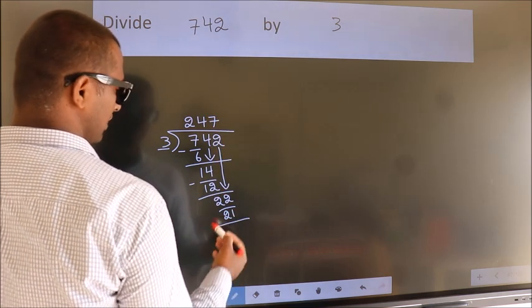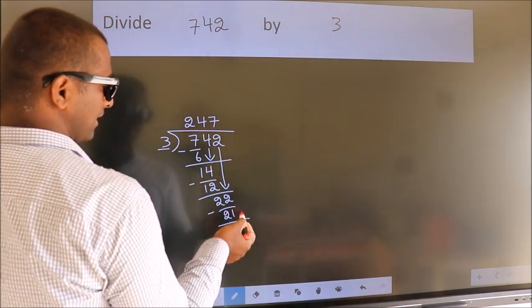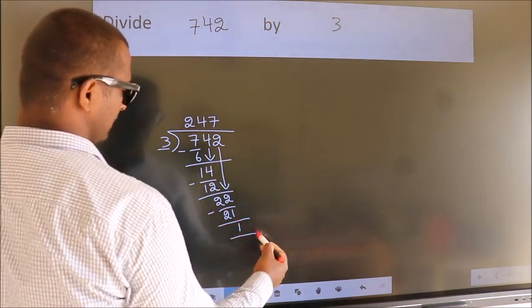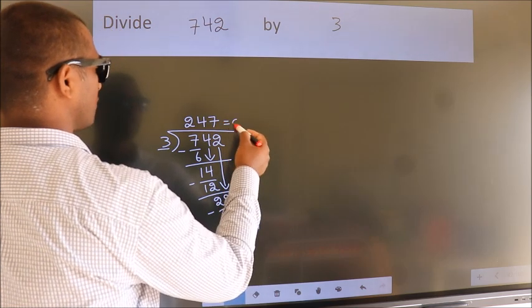Now we subtract and get 1. There are no more numbers to bring down, so we stop here. This is our remainder, and this is our quotient.